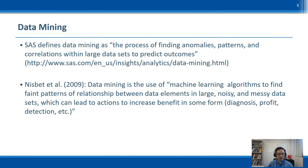The SAS Institute defines data mining as the process of finding anomalies, patterns, and correlations within large datasets to predict outcomes. Additionally, Nisbet et al. defined data mining as the use of machine learning algorithms to find patterns of relationship between data elements in large, noisy, and messy datasets, which can lead to action to increase benefits in some form such as diagnosis, fraud detection, etc. Thus, what the machine in Person of Interest does is nothing more than data mining.